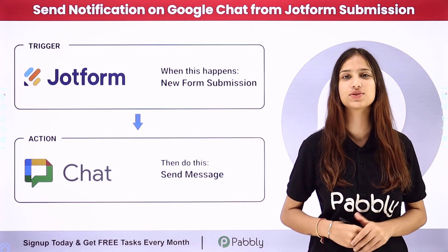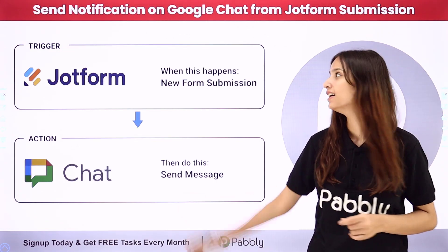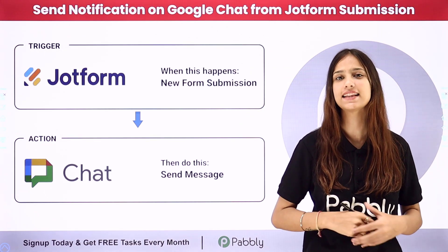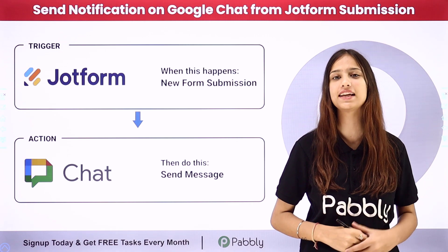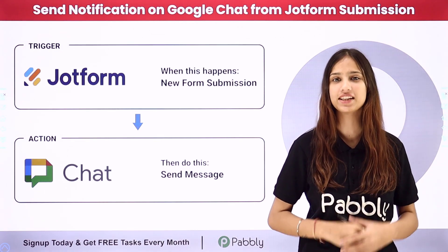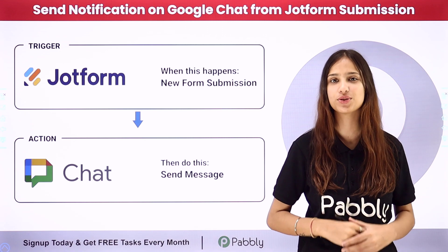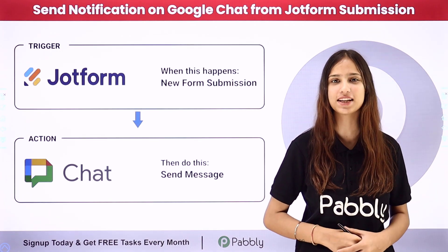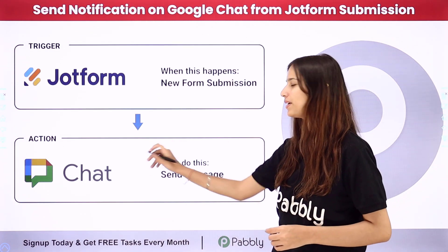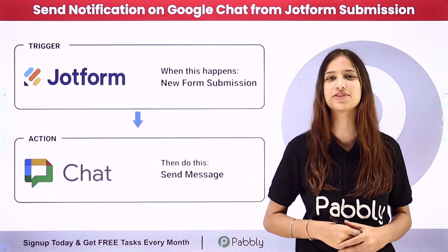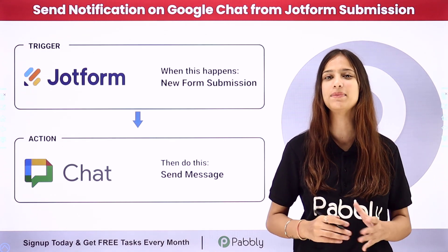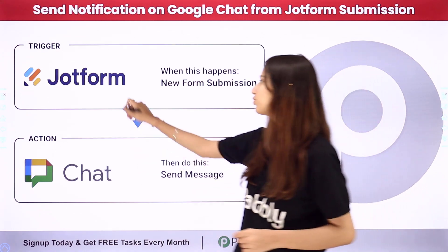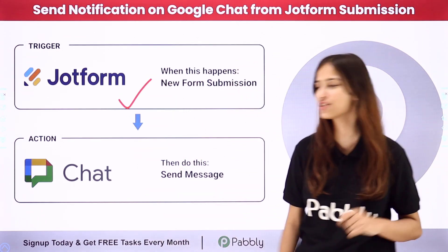Hello everyone, welcome back to Pabbly. In today's video we will understand how to send a notification on Google Chat from a JotForm submission. By using JotForm I have created an employee work report form, and my objective is that whenever an employee submits that form I want to send a notification on Google Chat. To do this I need to set up a connection between these two applications using Pabbly Connect. Pabbly Connect follows the concept of trigger and action — my trigger application will be JotForm and my action application will be Google Chat.